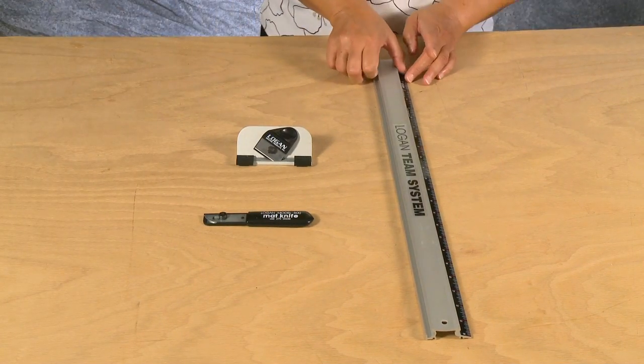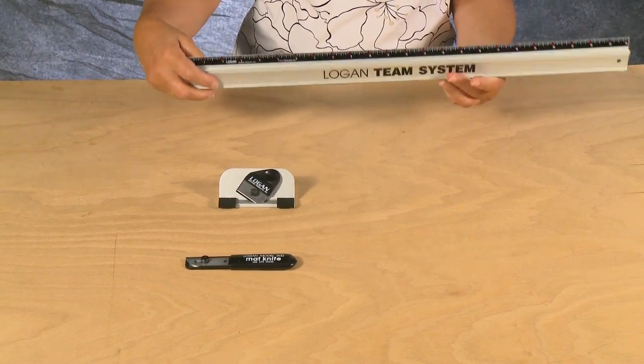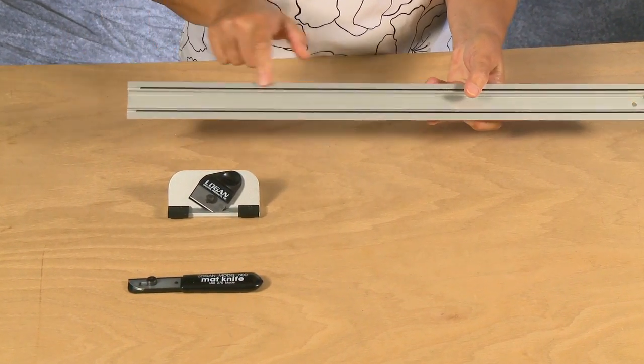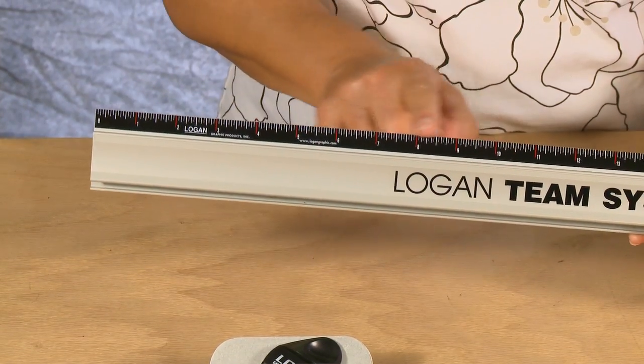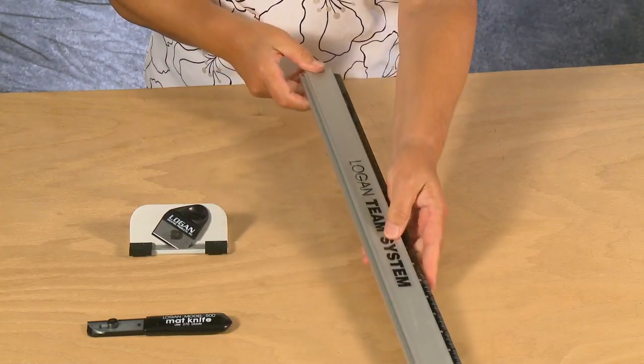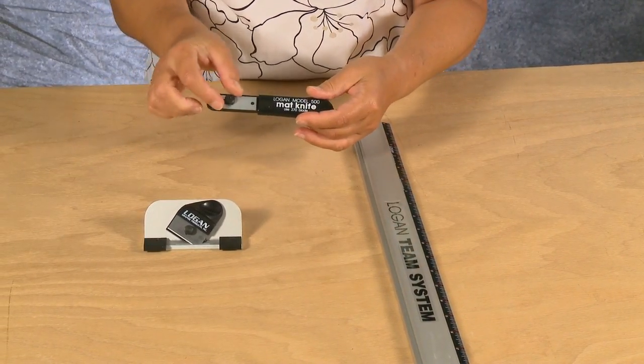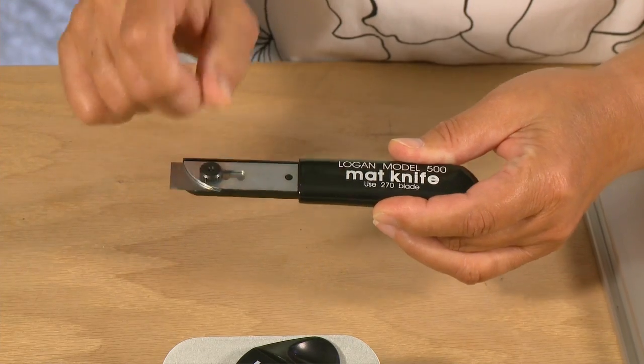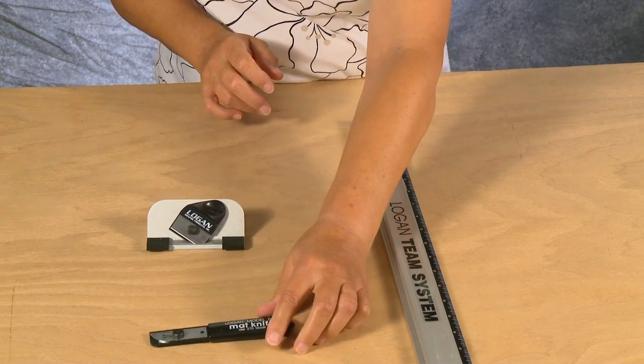The contents of the Logan Team System Plus is either a 24 or 40 inch aluminum guide rail with a rubberized base, a scaled edge, and a raised aluminum edge. Also included is a three depth position mat knife.